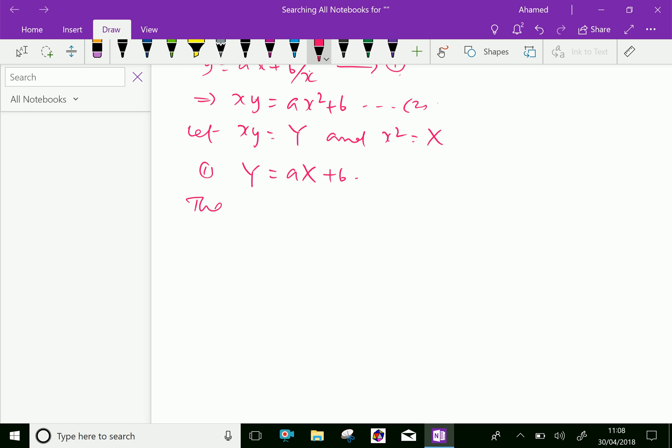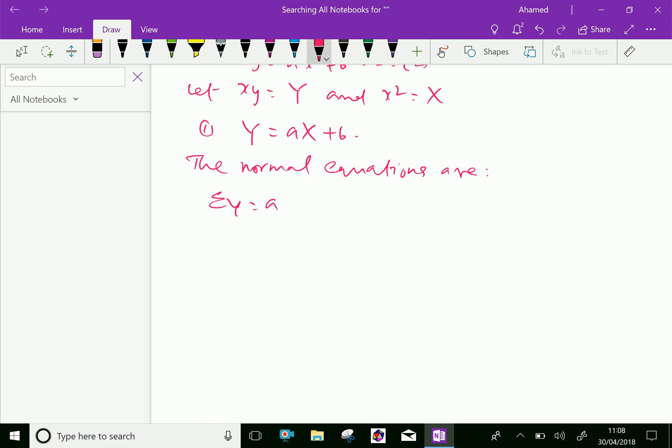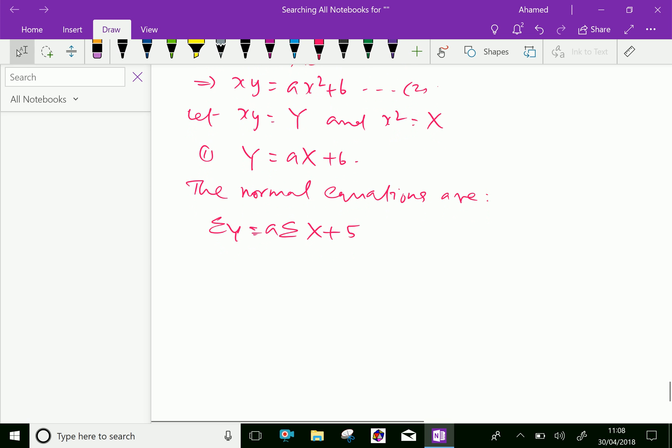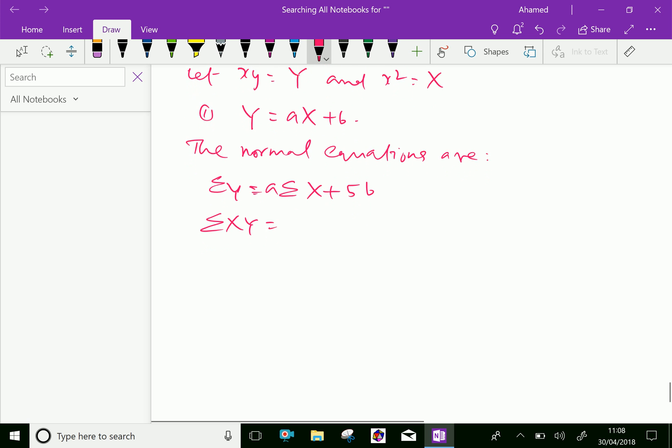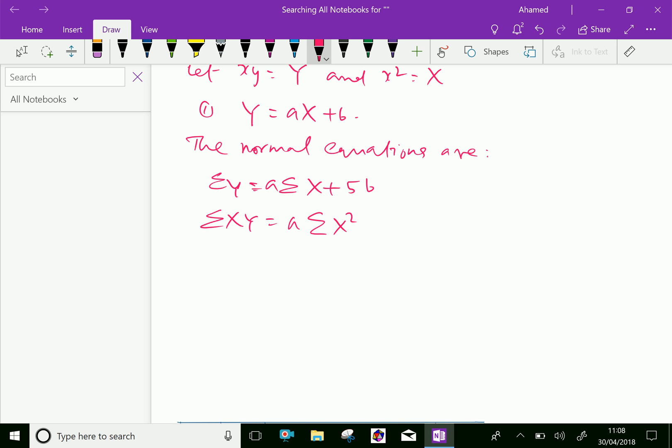Now, the normal equations are: sigma Y equals a sigma X plus 5b, and sigma XY equals a sigma X² plus b sigma X. Since the number of data points is 5, we use 5b in the first equation.